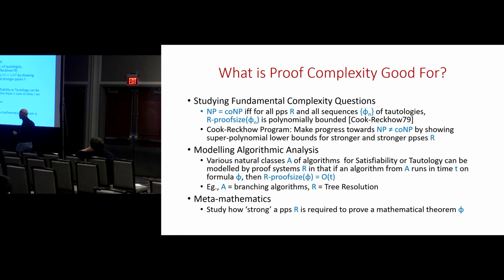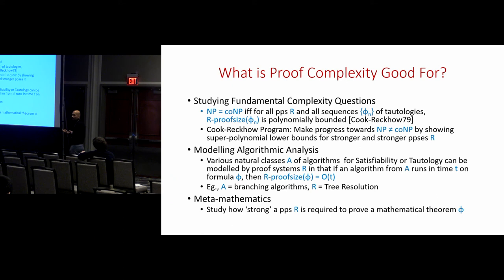The second reason for studying proof complexity is that it models algorithmic analysis. Various natural classes of algorithms for satisfiability or tautology can be modeled by proof systems in the sense that if an algorithm runs in time t on an instance φ, that can be translated to a proof in the corresponding proof system of size approximately t. So if you want to study hard instances for algorithms, one way is to look at the corresponding proof system R and show lower bounds there.